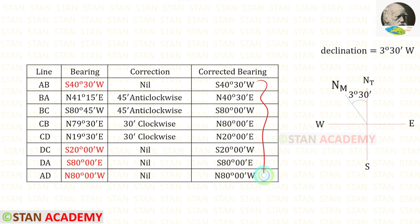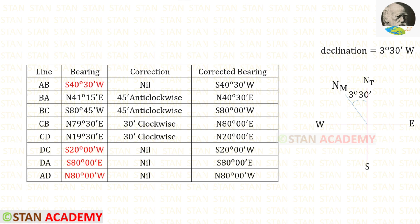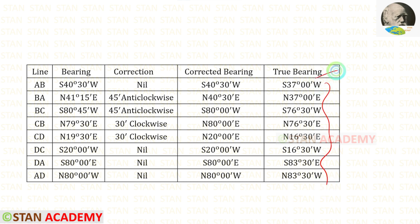We have now found all of the corrected bearings. The declination is given as 3 degrees 30 minutes west. To find the true bearings, from the clockwise readings we subtract 3 degrees 30 minutes, and from the anti-clockwise readings we add 3 degrees 30 minutes. When we do that, we get the true bearings.